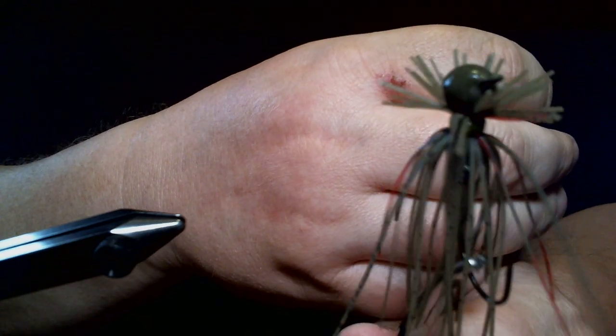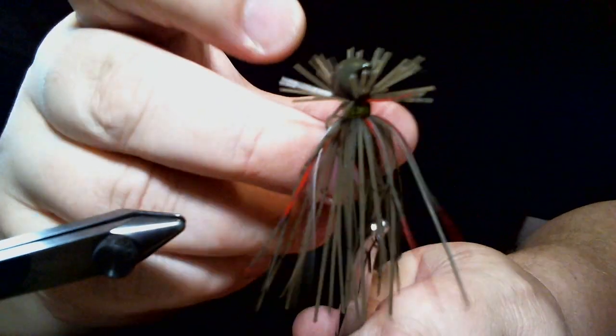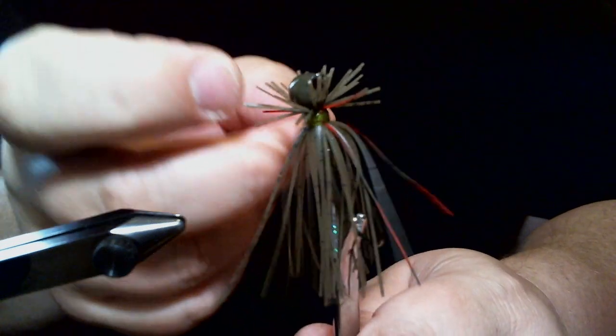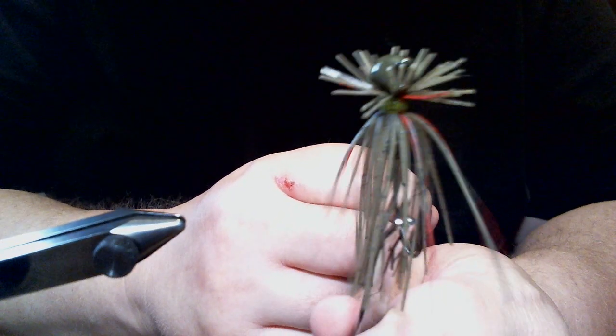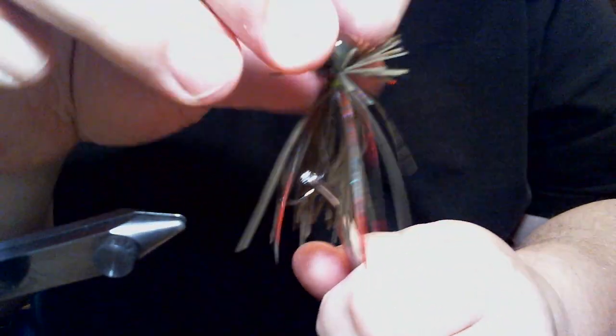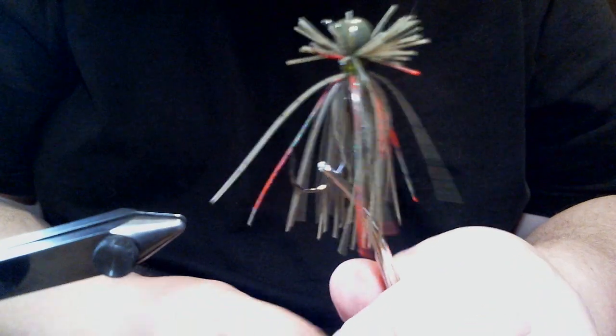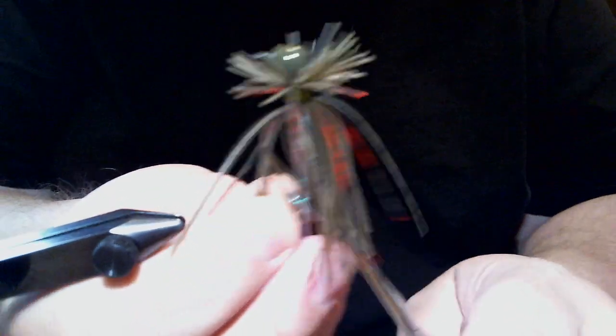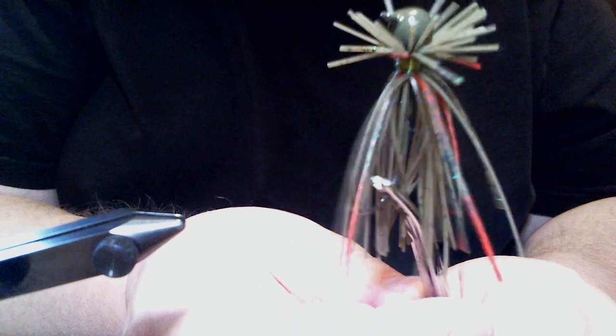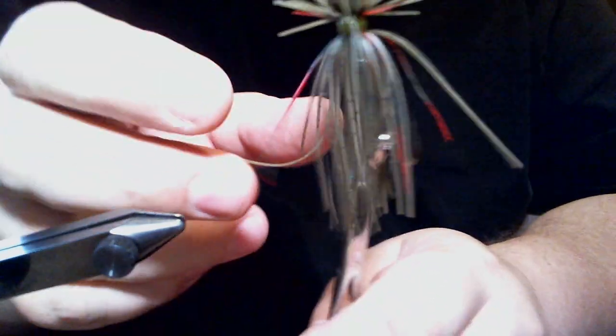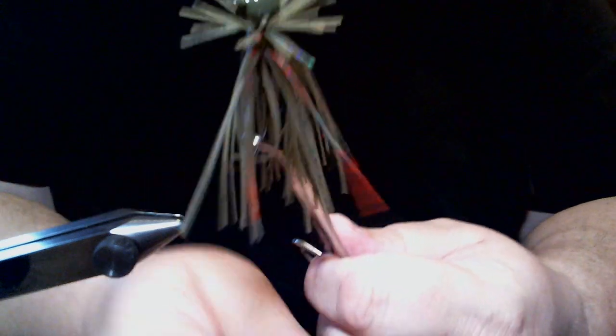That's going to be really good when you've got sunny conditions and dirty water. That green pumpkin candy is going to give it a flash, but not too much. It's still going to stay relatively a natural color. So next time you're doing a jig and you want to add accent colors, think about just adding just a few strands. And don't get real heavy-handed with it and you'll catch a lot of fish with it. Thanks for watching.